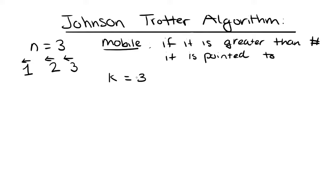k equals 3 in this case because 3 is greater than 2, and we only have two mobile numbers, so k is very important here. What you do next is switch 3 to its adjacent number in the direction of its arrow, so we go from 1, 2, 3 to 1, 3, 2. The next step is to flip the arrows of all numbers greater than k, but since k is the greatest number here, we don't do anything with that.